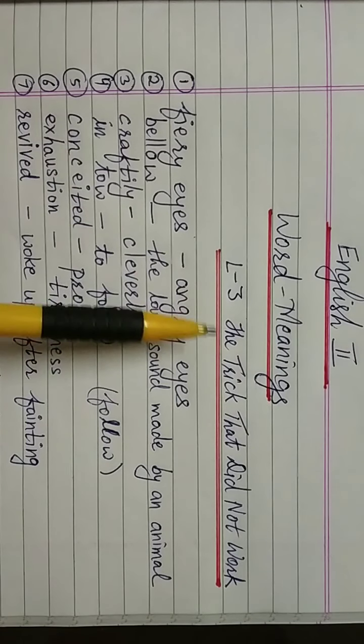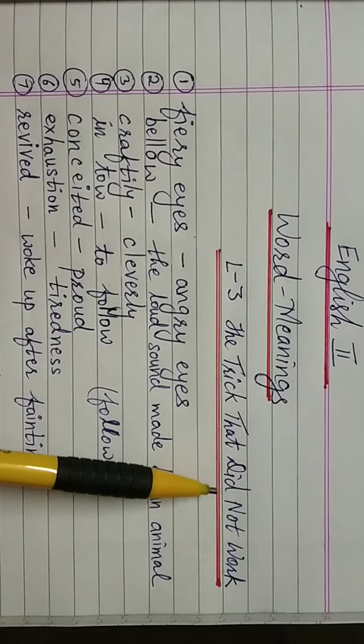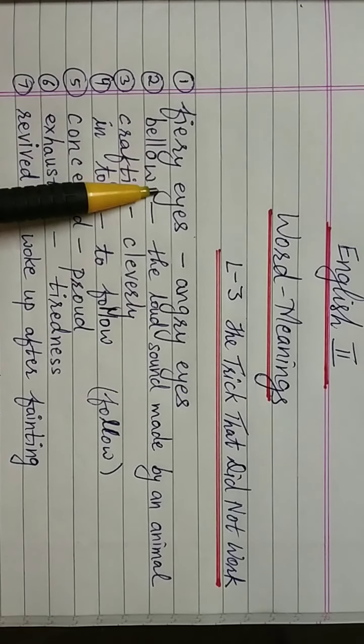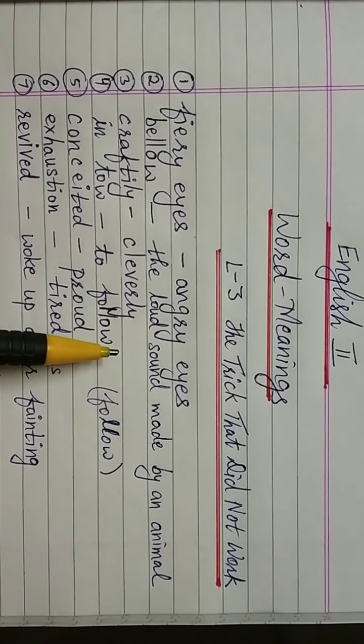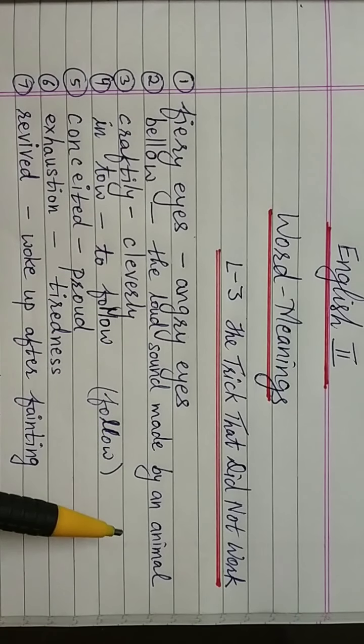Let's revise the word meanings of lesson number 3, The Trick That Did Not Work. Fiery eyes means angry eyes. Bellow means the loud sound made by an animal. Craftily means cleverly.